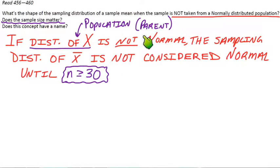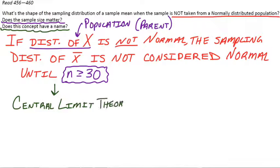So if the parent population isn't normal, let's say it's skewed right or skewed left, then we're not going to say the sampling distribution of X-bar is normal unless we get a sample size greater than or equal to 30. Does it have a name? Yes. That is the Central Limit Theorem. It's a really important theorem for this course. Pretty much the whole entire second semester is built around this theorem in some way.